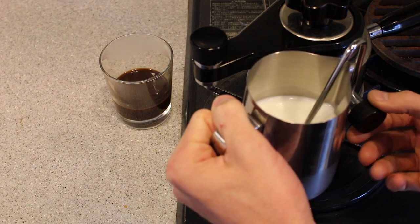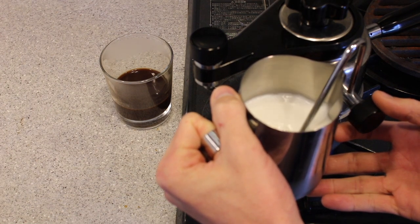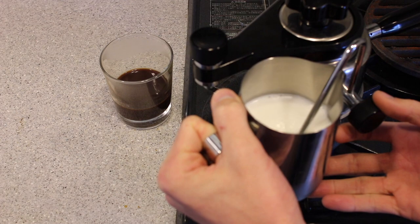With the head of the steam wand submerged in the milk, open up the steam valve fully. Then slowly lower the milk jug so the tip of the wand is just dipping into the milk and stretch it as desired.